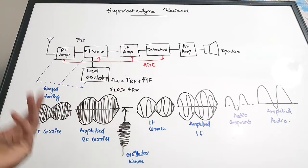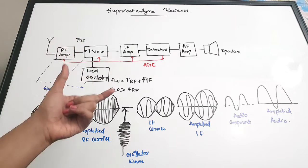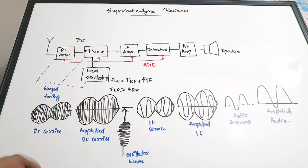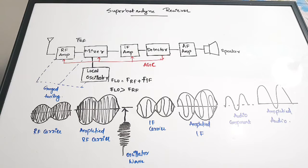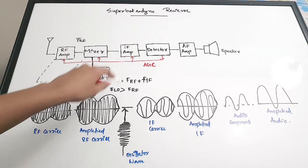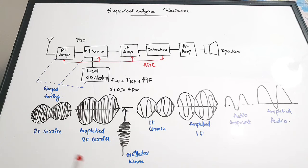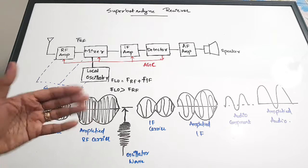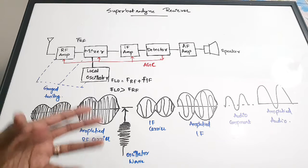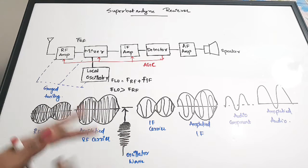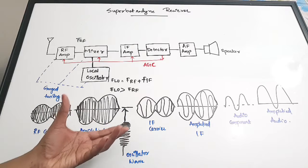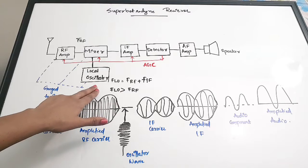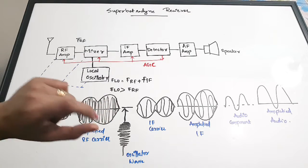The reason we go for super heterodyne receivers is that processing at the same high RF frequency is very costly. So we mix the higher frequency with another frequency to form a lower frequency component, then do the processing — making it cost-friendly. The basic principle is: we take the radio frequency, mix it with the local oscillator frequency, and form an intermediate frequency of lower value.